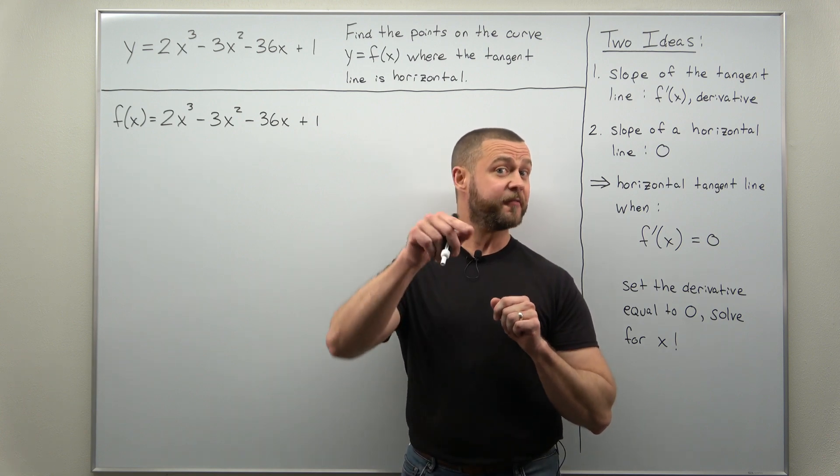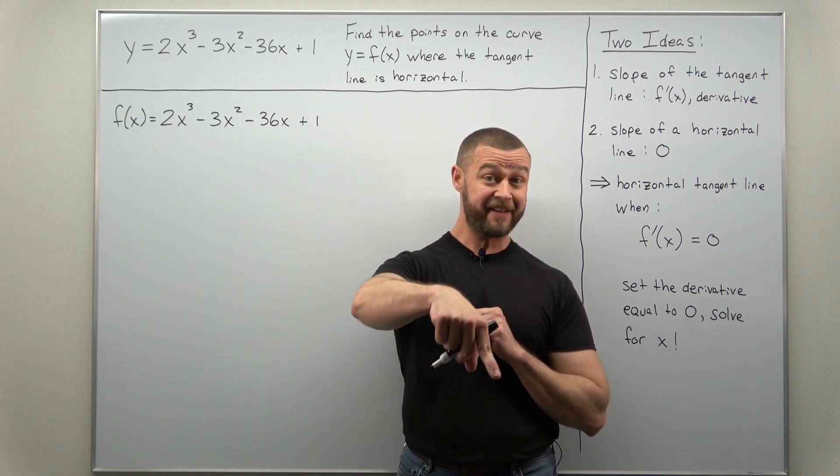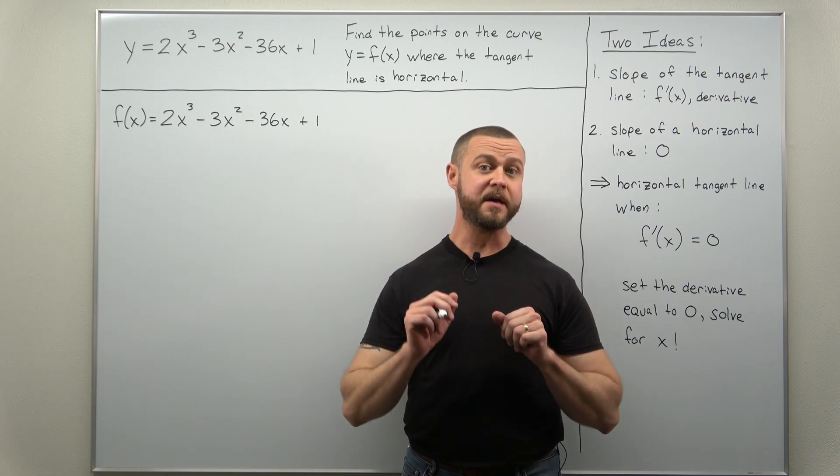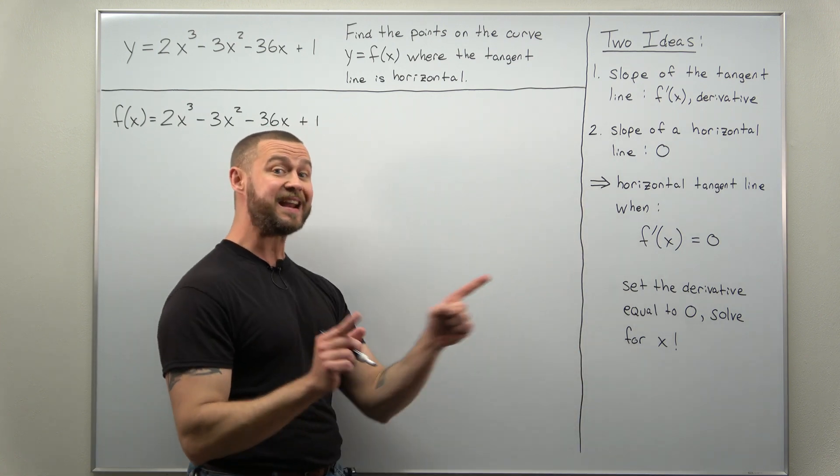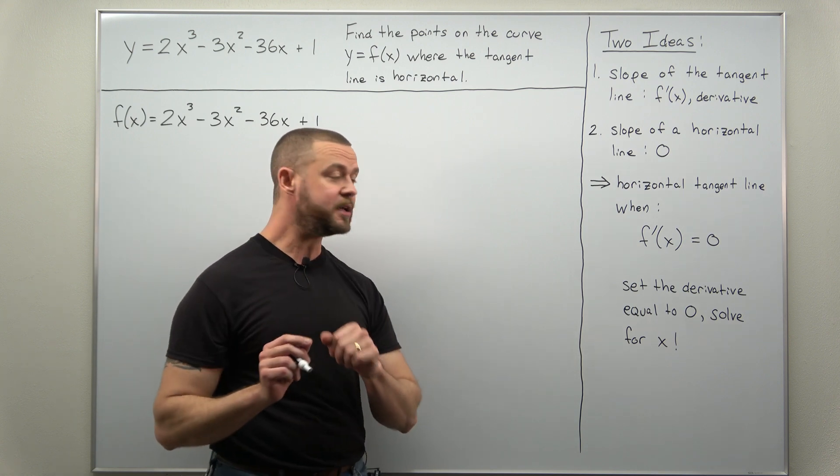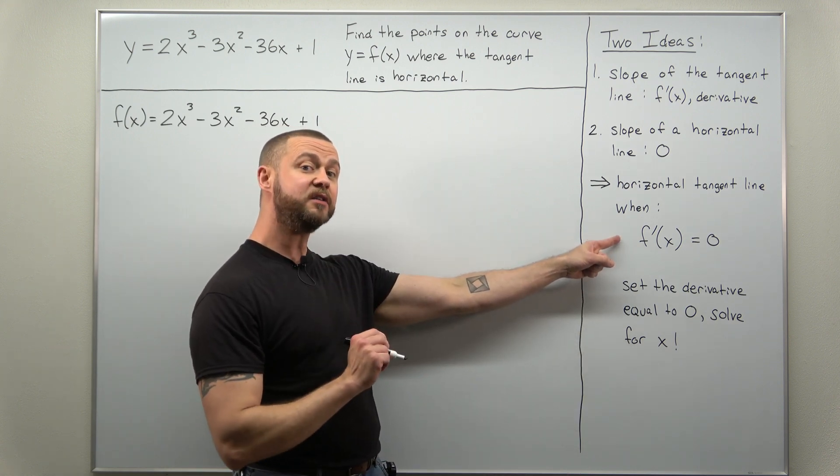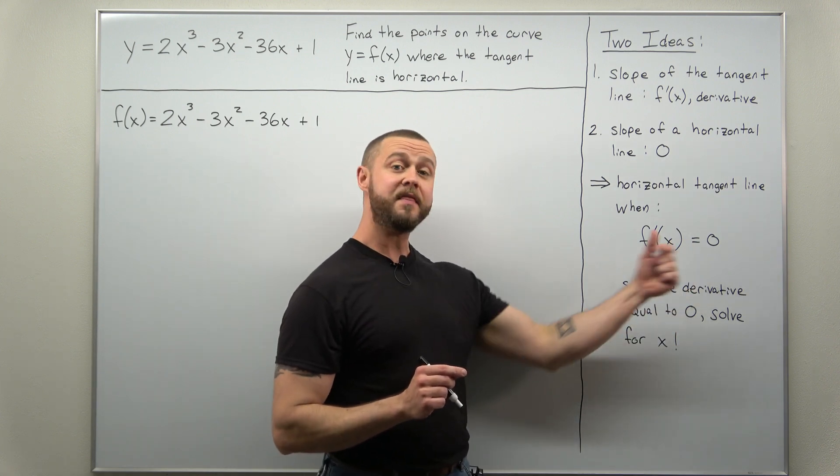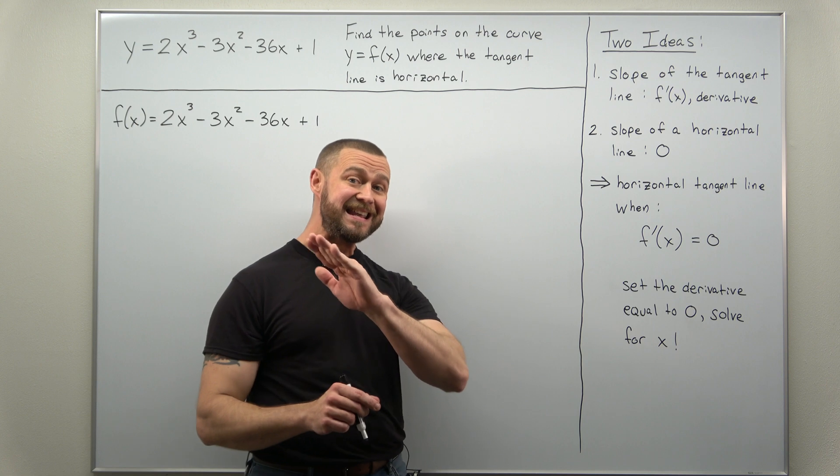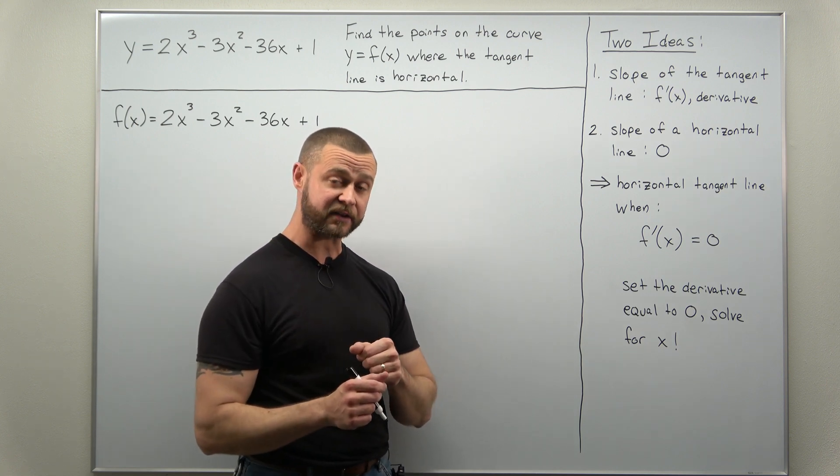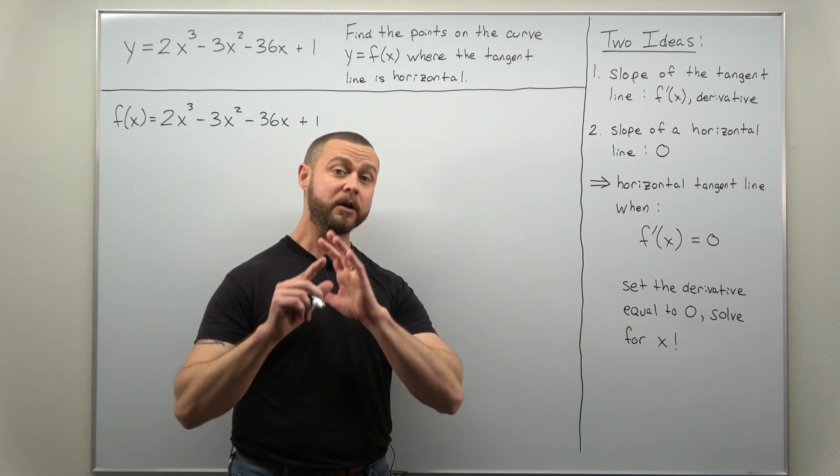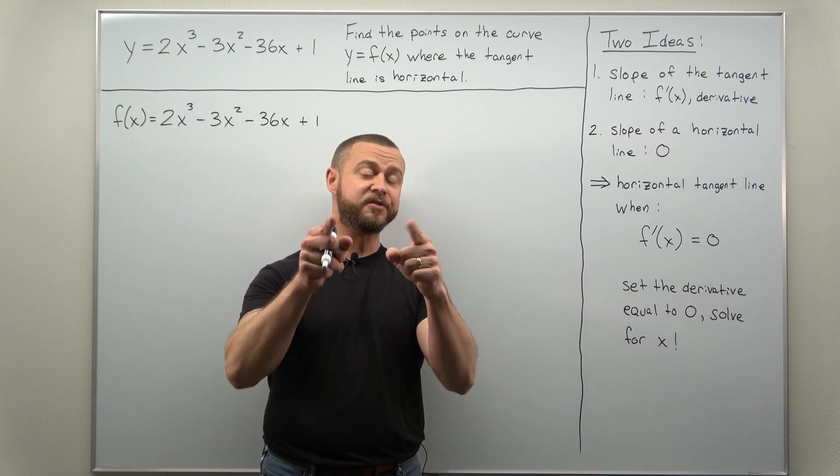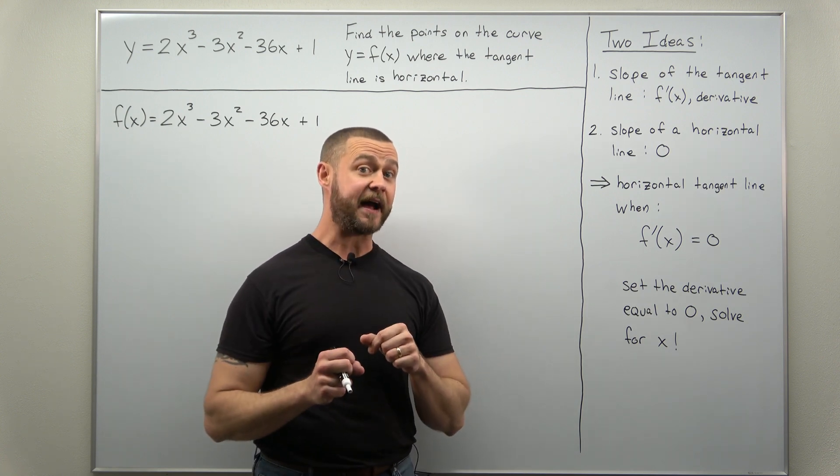Now if you haven't gone through the first problem, check that out. I have that link down below in the description and we've set everything up from the beginning to make sure you can understand how to solve these. The main idea to find where tangent lines are horizontal is we're going to calculate the derivative and then set it equal to zero. And that gives us an equation that we solve for x.